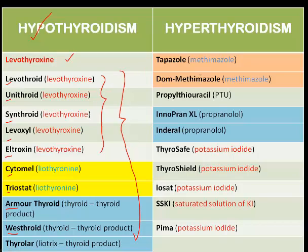On the other hand, if the patient is hyperthyroid or his thyroid gland is functioning more than normal, producing more of T3 and T4, you need to stop the thyroid gland — so you give antithyroid drugs. The common antithyroid drugs are: one, methimazole, available as Tapazole and Dome-methimazole. Then, you have propylthiouracil, PTU. You have propranolol, available as Innopran.